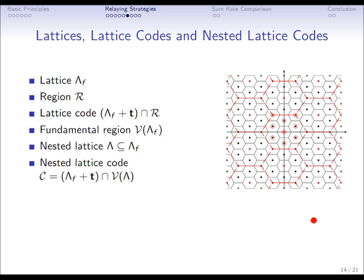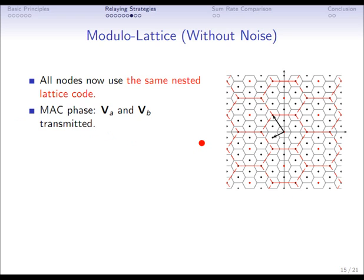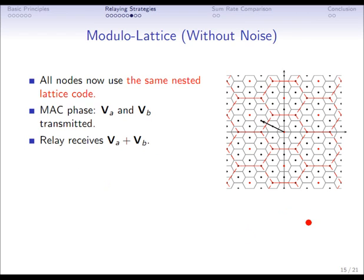As an example, I'm assuming there is no noise at the nodes, and each node is equipped with the same nested lattice code in dimension n/2, visualized here in dimension 2. In the first phase — the MAC phase or uplink — the two users select their messages and map them to two points in the nested lattice code. They transmit these two points, which get linearly superimposed at the relay. Because of the group property of the lattice — adding two lattice points yields another lattice point — the relay receives another lattice point.